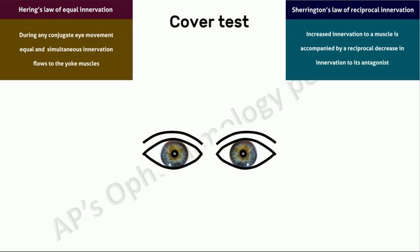We shall study this with respect to a right lateral rectus palsy. In the primary position, because of weakness of the right lateral rectus, there is an unopposed action of the right medial rectus which causes the right eye to adduct. So the patient presents with a right esotropia.